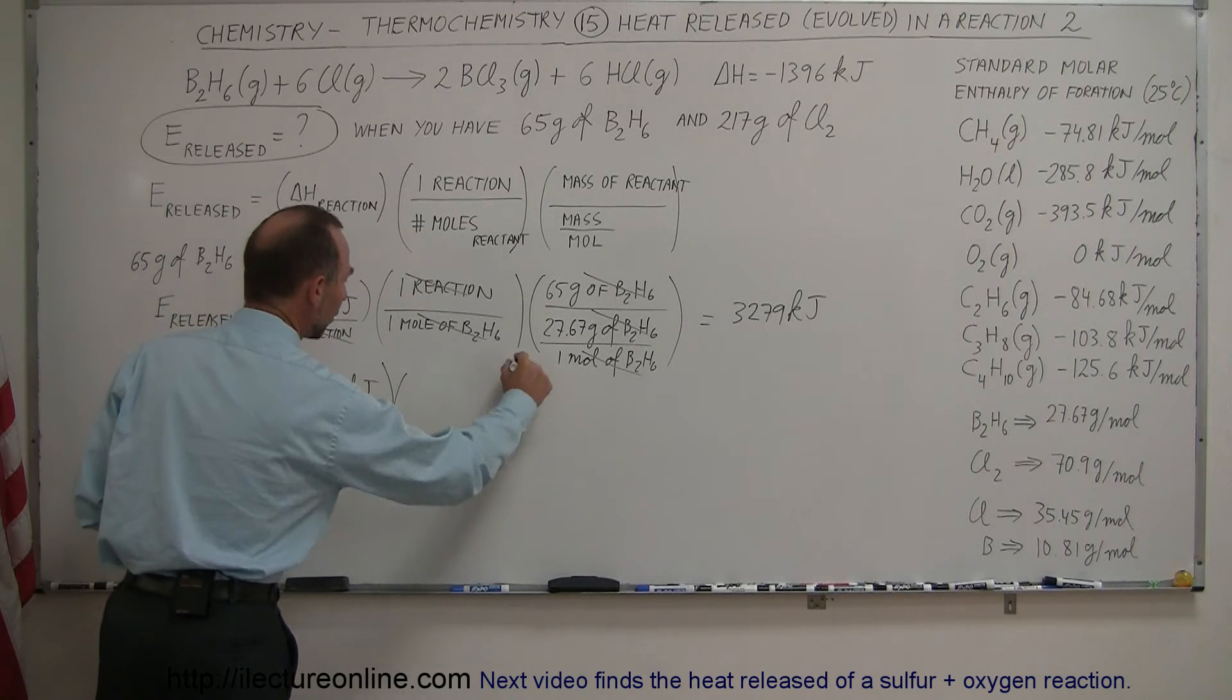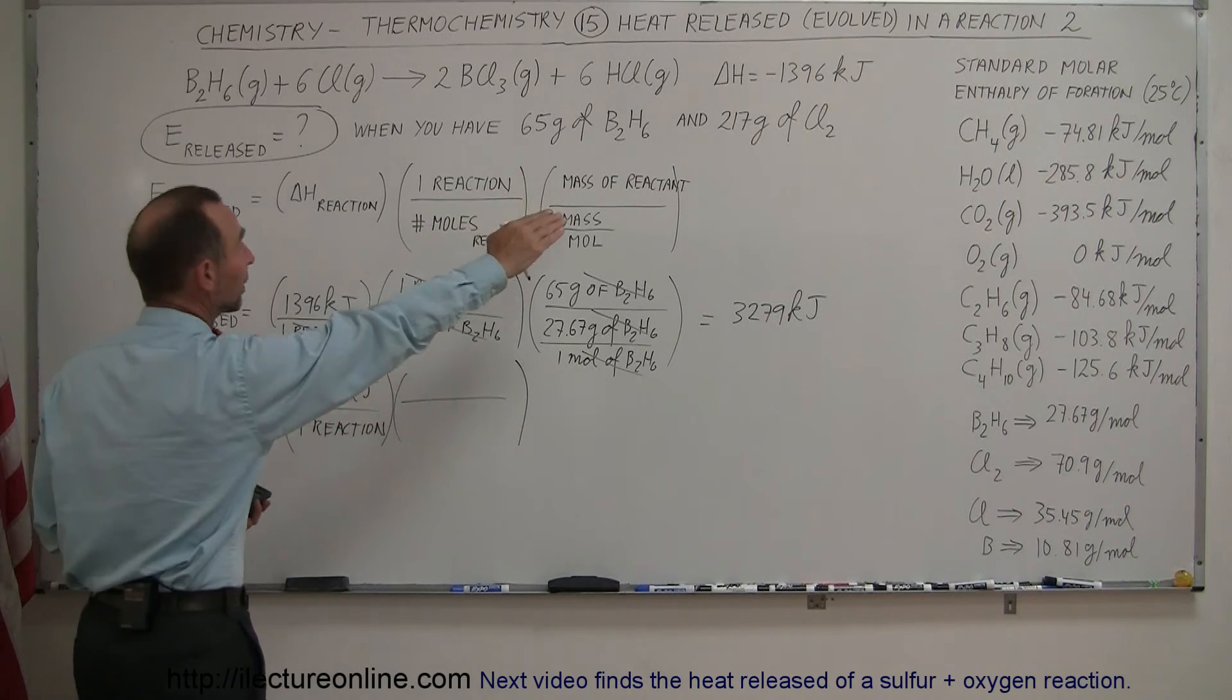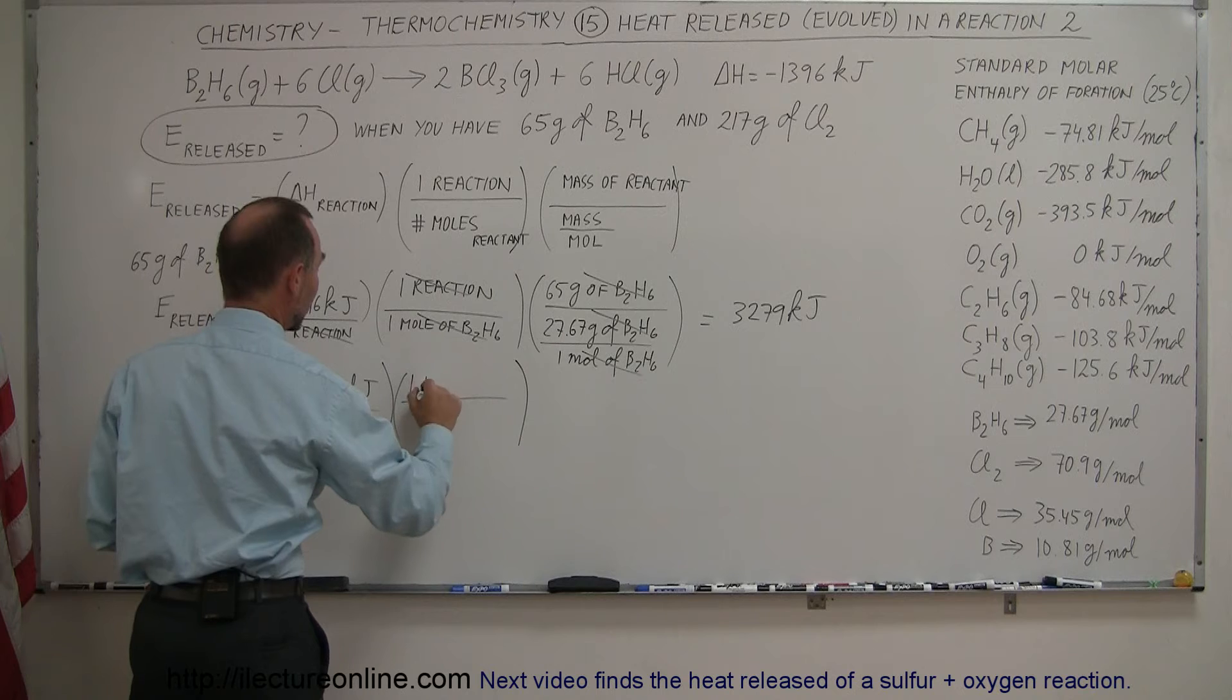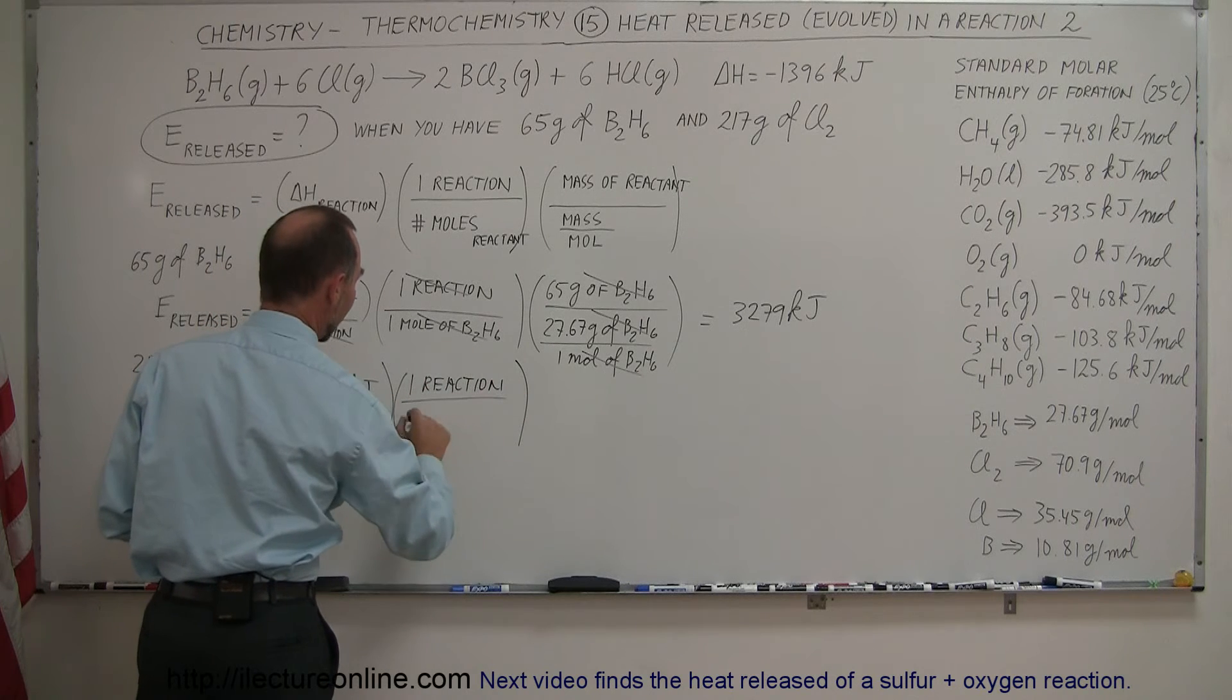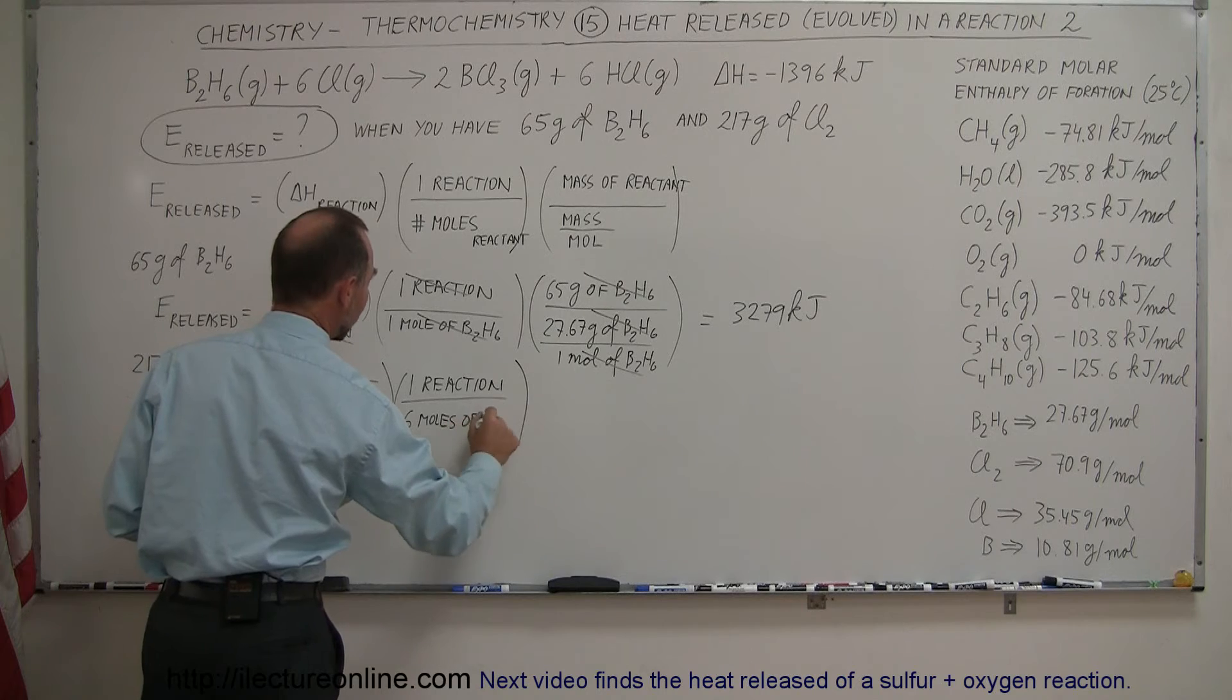Now we have to account for the number of moles of our reactant that we're concerned with. We're dealing with chlorine gas. We come up here, we have 6 moles of chlorine gas, which means 1 reaction divided by 6 moles of chlorine gas.